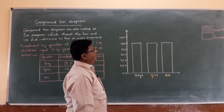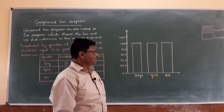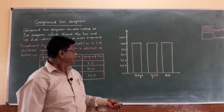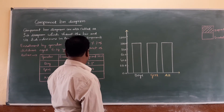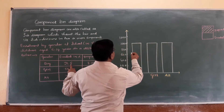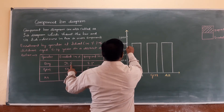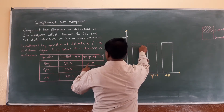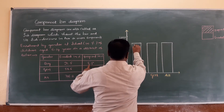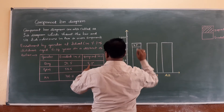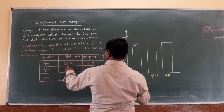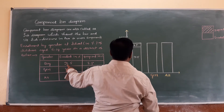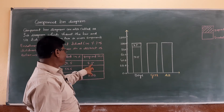Now you start by marking the enrolled percentage and dropout percentage. First, draw the boys bar: boys enrolled is 91.5%, so mark 91.5 on the Y axis — it falls between 90 and 100. The remaining 8.5% is dropout. So 91.5 is enrolled and 8.5 is dropout in percentage.